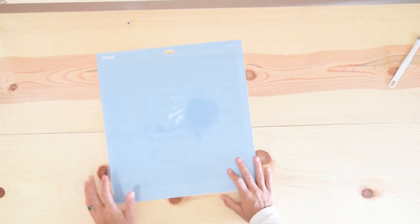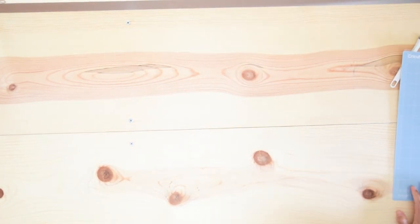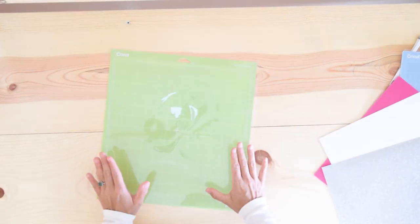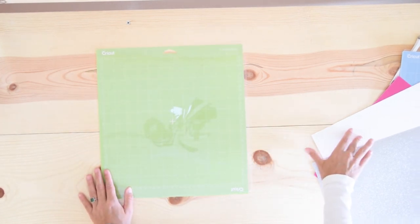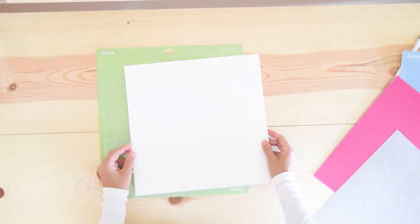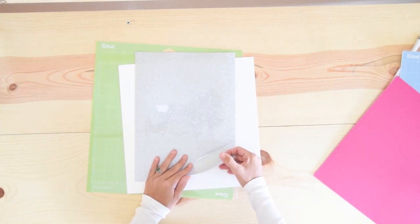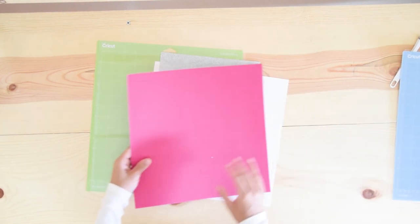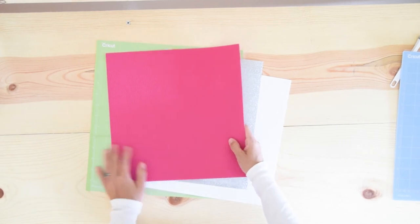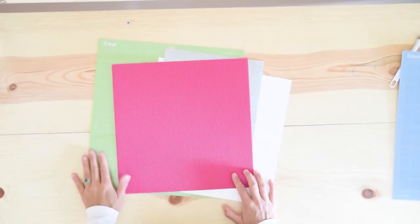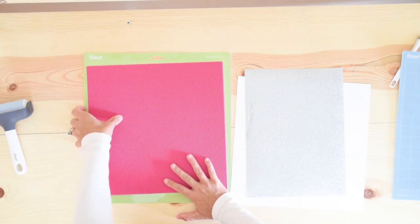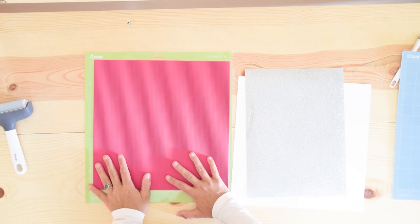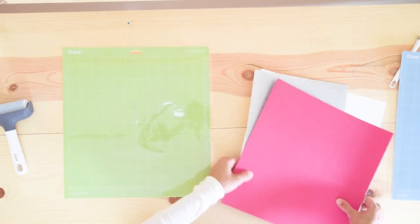Now let's move to the standard grip mat. The standard grip mat or green mat is perfect for medium materials. Think about regular cardstock like this, it's perfect. Also glitter iron-on would work great for this mat, and papers like corrugated paper. This mat is perfect for these materials. Again, you place it with a brayer and then you should remove it by bending the mat. Very important to bend the mat. Don't forget to do that.